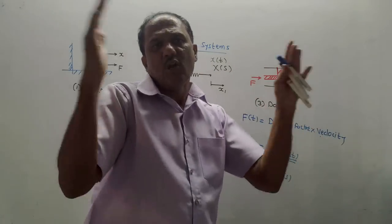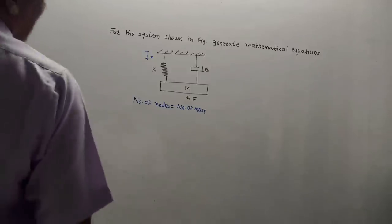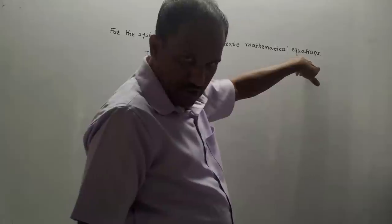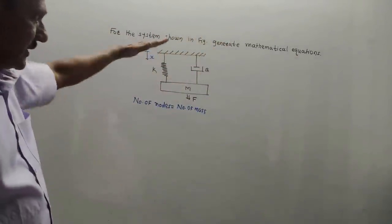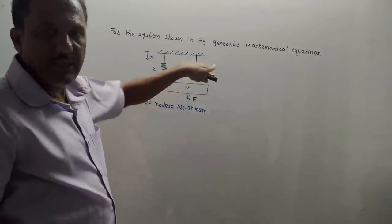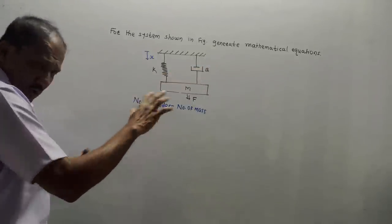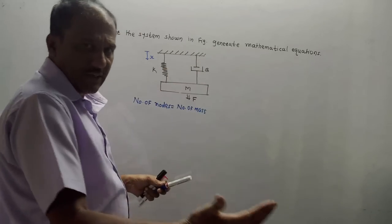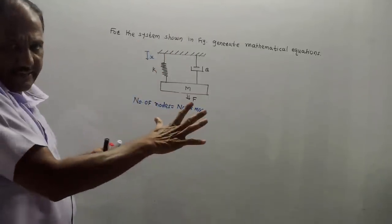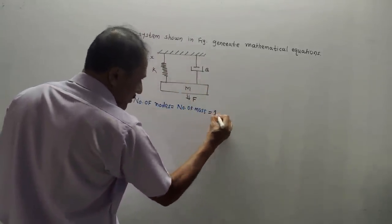Damping is very similar to the shock absorbers used in vehicles. From the exam point of view, the question can be: 'For the system shown in the figure, generate mathematical equations.' K represents the spring constant, M is mass, B is the damping factor related to friction. Remember one simple concept: number of nodes equals number of masses. In the given mechanical diagram, there is only one mass, so the number of nodes equals one.